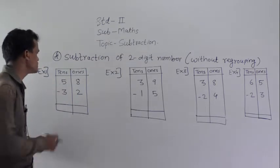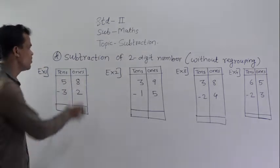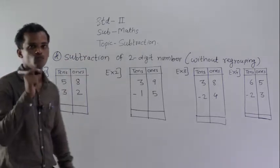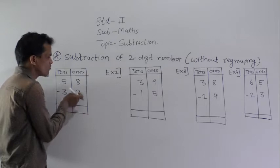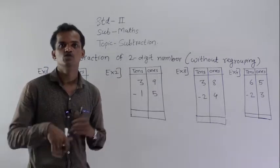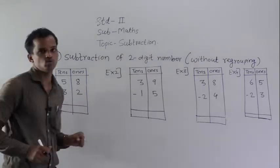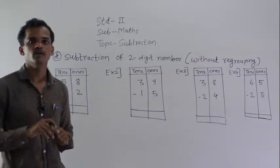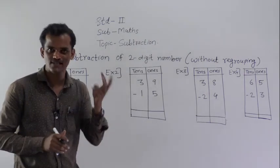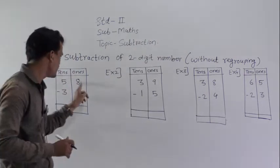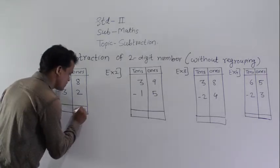Solve the first example: 58 minus 32. Always start from the ones place. Subtract 2 from 8. By using backward counting, we will solve this. Count 2 fingers backward from 8. Before 8: 7, 6. So 8 minus 2 equals 6.